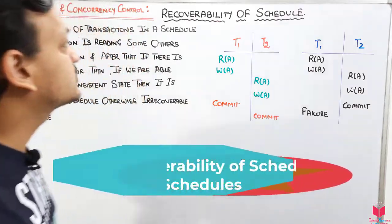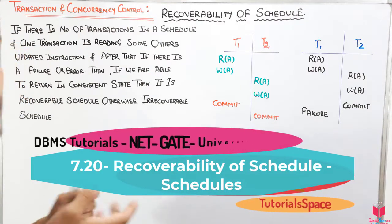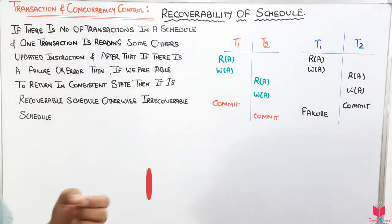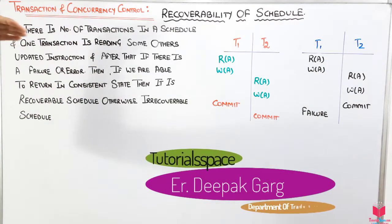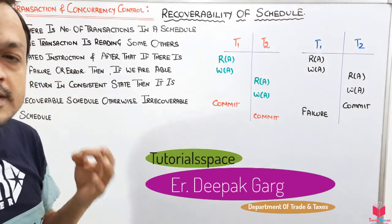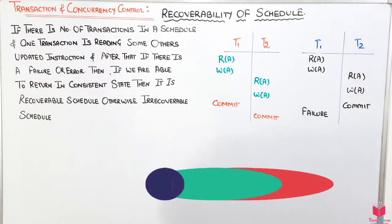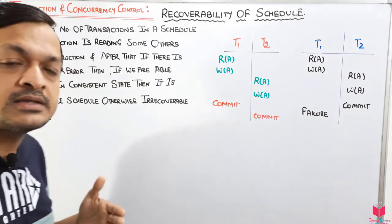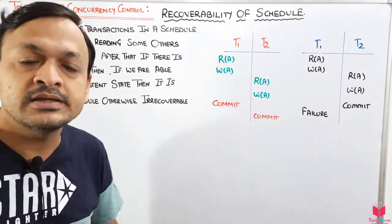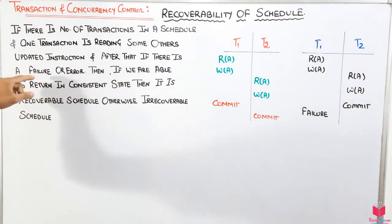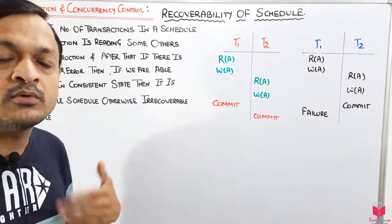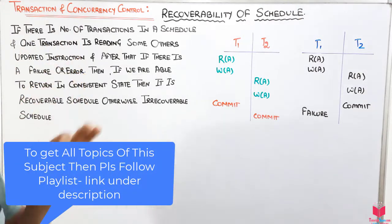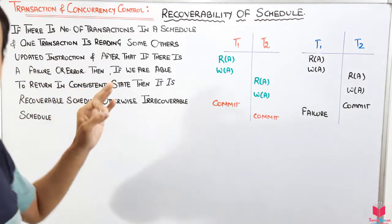Today we will discuss the topic recoverability of schedule. We have already done all the sections regarding serializability. Recoverability of schedule says that if there is a number of transactions in a schedule — at least two or three or more — and one transaction is reading some other's updated write instruction, and after that if there is a failure or error, then if we are able to return to a consistent state, it is a recoverable schedule.